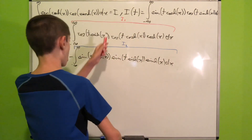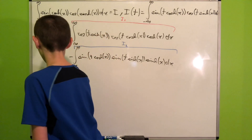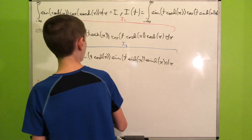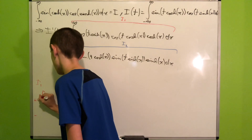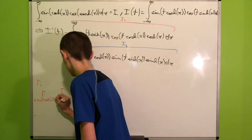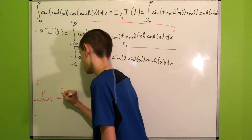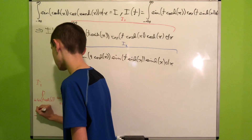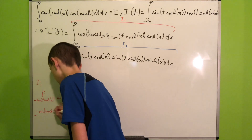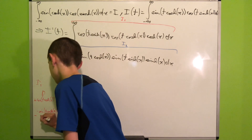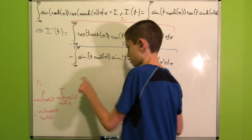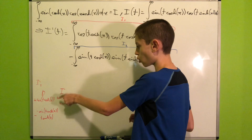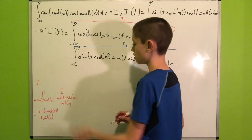We focus on I1 and apply integration by parts. We differentiate cosine of t·cosh(x) and integrate cosine of t·sinh(x) times cosh(x). Differentiating gives negative sine of t·cosh(x) times t·sinh(x) — by the chain rule, derivative of cosh(x) is sinh(x). For the integration, using the substitution u = t·sinh(x), we get derivative t·cosh(x), so there's a factor of t out front.